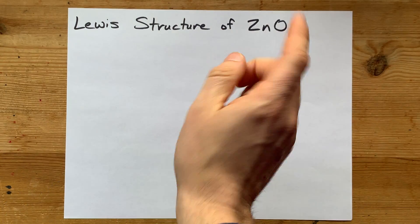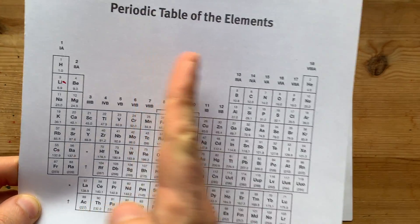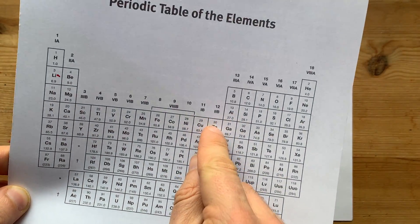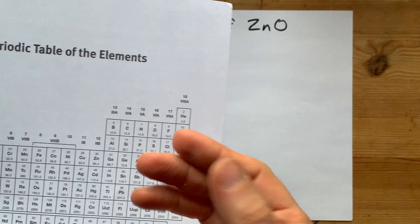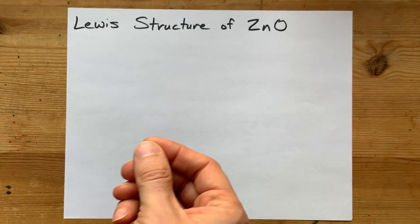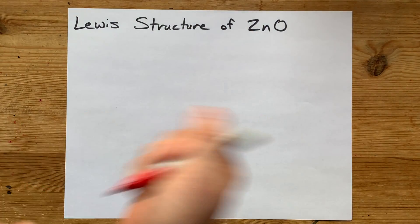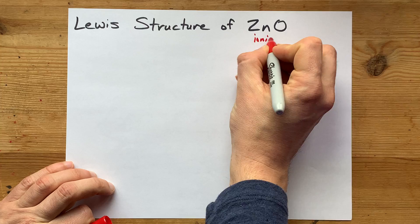How do you draw the Lewis structure for zinc oxide? Well, zinc is not officially a transition metal. It sits here and likes to have a charge of positive two. Oxygen is a non-metal, and when you combine metals with non-metals, you get an ionic compound.